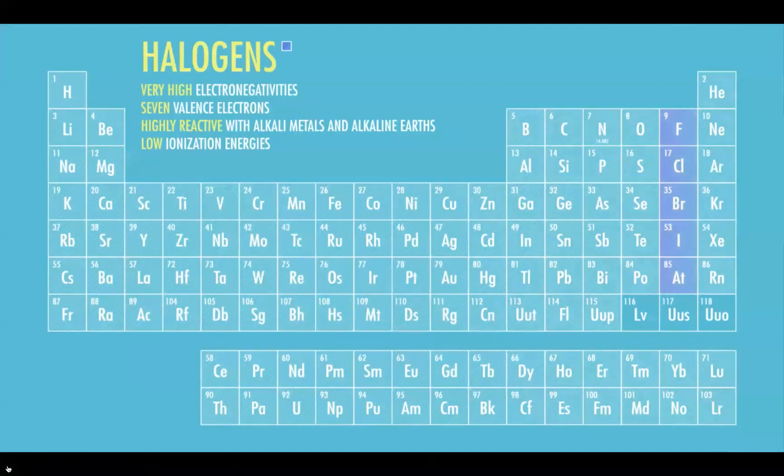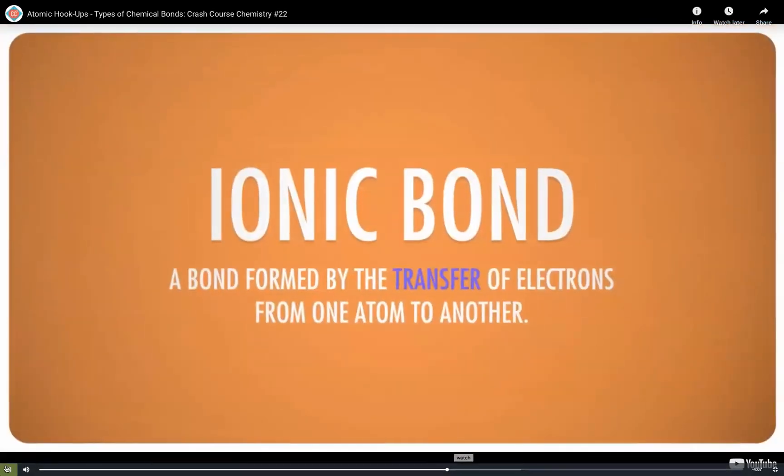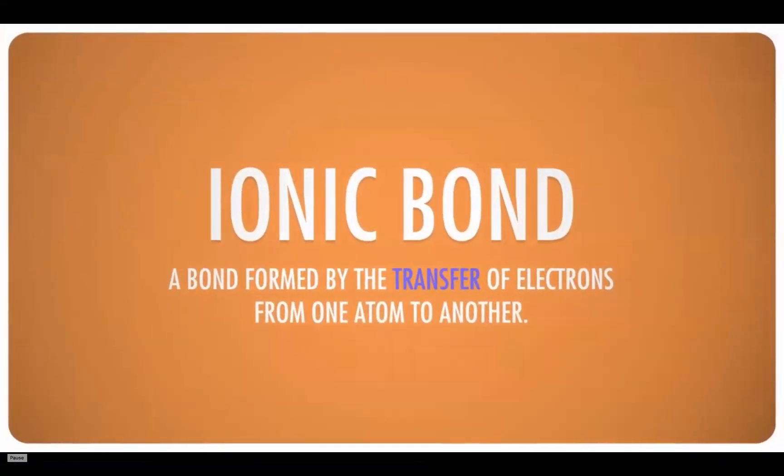When positive ions come across negative ions — like those formed from halogens — they're attracted to each other, reaching a point of minimum energy. This type of bond is called an ionic bond: a bond formed between a positive ion and a negative ion. An ionic bond is formed by the transfer of electrons from one atom to another.